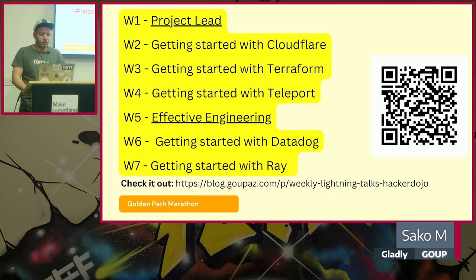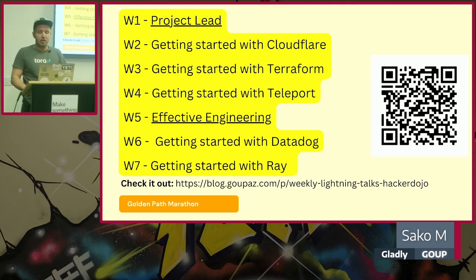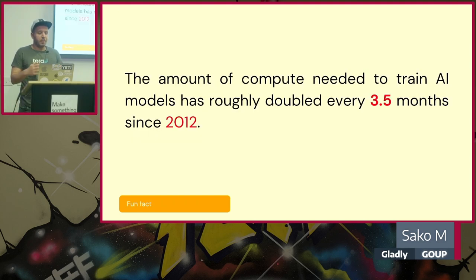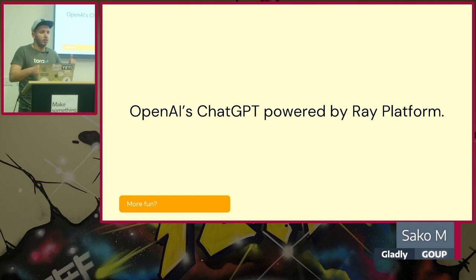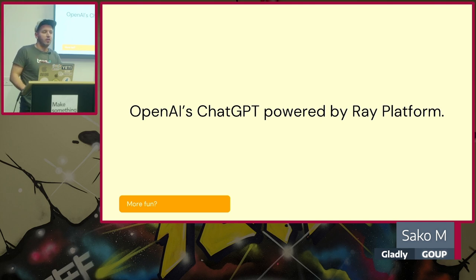Thank you so much. This is my seventh week since lightning talks started, and it's going to be open source — I'm tracking all of them on my Substack blog, so feel free to check out the previous talks. Now for a fun fact: the amount of AI training data used in models has roughly doubled every 3.5 months since 2012, which came out of the OpenAI research team. And the reason we're talking about Ray today is that the infrastructure behind your daily ChatGPT is the Ray platform.